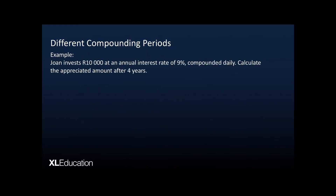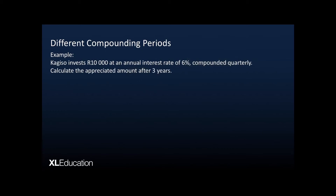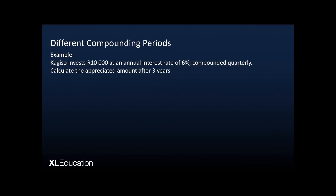Let's look at an example. Joan invests 10,000 rand at an annual interest rate of 9% compounded daily. Calculate the appreciated amount after four years. We adjust our interest rate to a daily rate by dividing 9% by 365, and we take our four years and multiply by 365 so that the exponent becomes the total number of times we calculate interest over those four years.